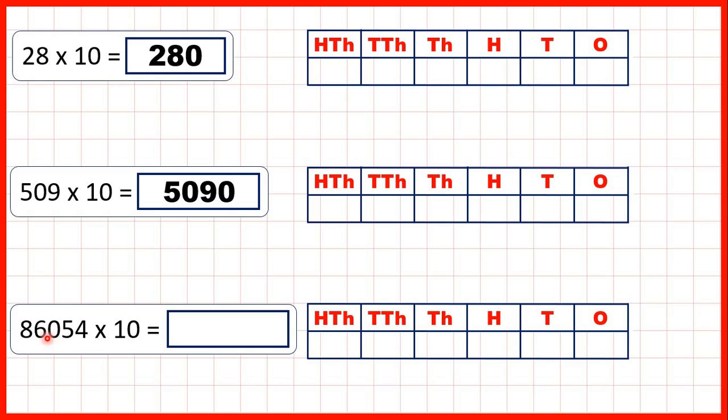And now we have 86054 times 10. That's 860540. So the number we started with, with a zero on the end.